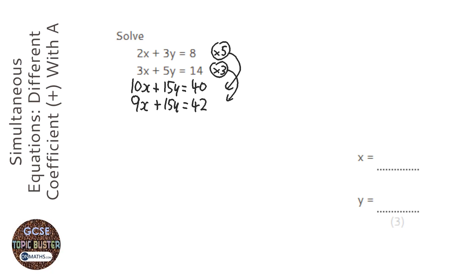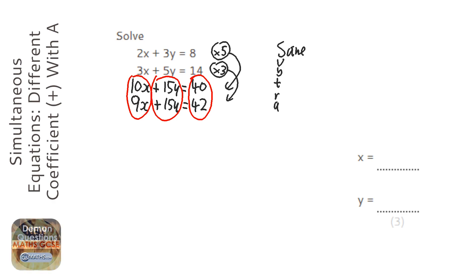Okay, so with simultaneous equations we work downwards. And simple rule is if you have the same signs on the coefficients you subtract, if you have different signs we add.